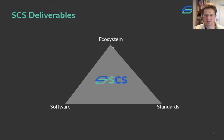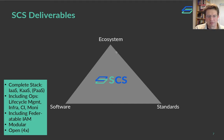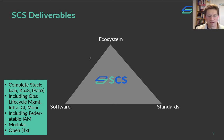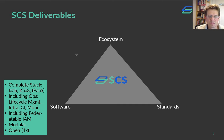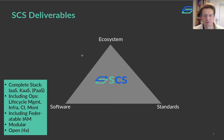So here's what SCS is delivering — it's really about three things: software, standards, and ecosystem. The software we want to provide is a complete stack that allows you to deliver cloud infrastructure — virtualizing your resources, managing your hardware resources, providing an infrastructure-as-a-service platform to your users, and providing a Kubernetes-as-a-service platform. We say Kubernetes-as-a-service and not just containers-as-a-service because engineers and developers need control over a Kubernetes cluster, not just access to it. And then optionally, over time, there will be growing platform service components you can use as building blocks to deliver higher-level services more efficiently.